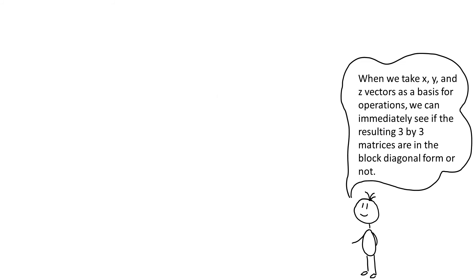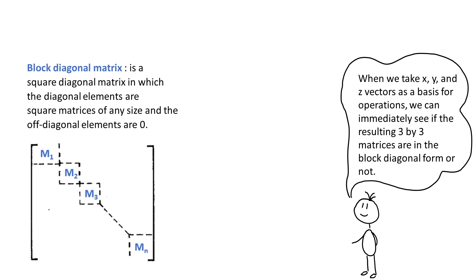Just to remind you, block diagonal matrix is a square diagonal matrix in which the diagonal elements are square matrices of any size and the off diagonal elements are zeros. Let's recall the matrices that we derived for C3Z group couple of videos ago. We see that these matrices are in the block diagonal form.